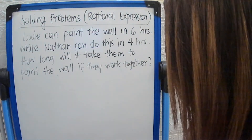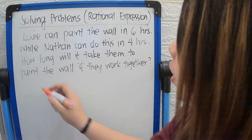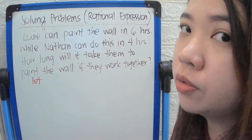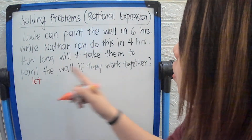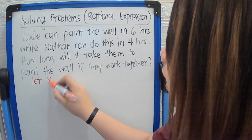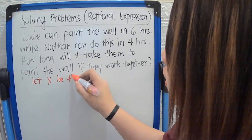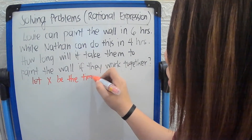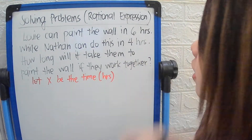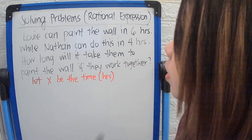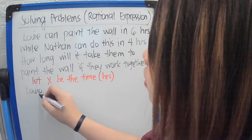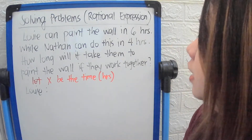First, we use a variable to represent the time, since that is what we are solving for. So let X be the time in hours, because the given values are in hours. What we're going to do is write expressions for Louis and Nathan.